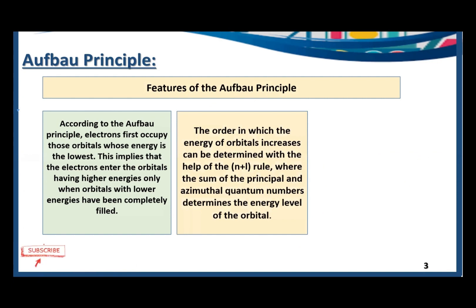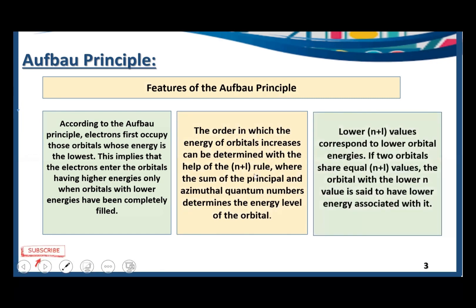The order in which the energy of the orbitals increases can be determined with the help of the n plus l rule. In the Aufbau principle, the n plus l rule is very important, where n is the principal quantum number and l is the azimuthal quantum number. Together they determine the energy level of the orbitals. Lower n plus l values fill first; higher n plus l values fill later.